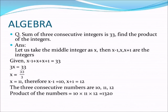Let us take x as the middle number of the three consecutive integers. The number before x is x minus 1 — subtracting 1 gives the previous number. The number after x is x plus 1 — adding 1 gives the next number. So the three consecutive numbers are x minus 1, x, and x plus 1.